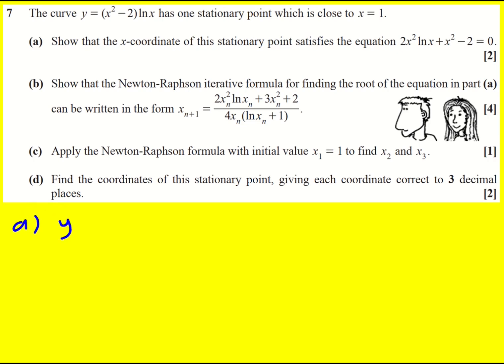We have this curve y equals x squared minus 2 times ln x and we're interested in the stationary point for it. So that's going to mean we need to find dy by dx and then set it equal to zero.